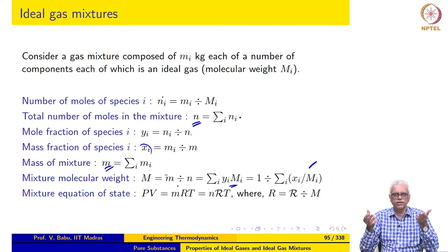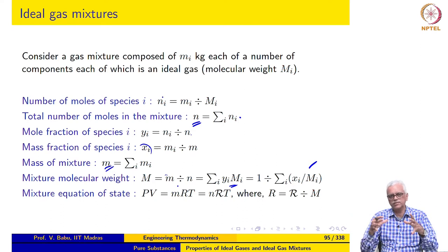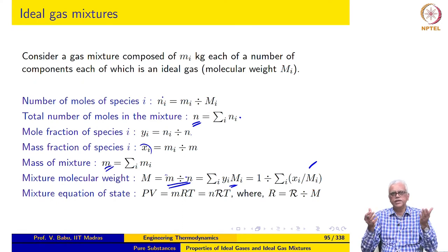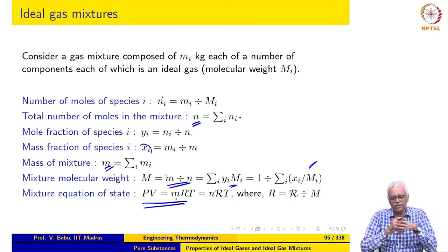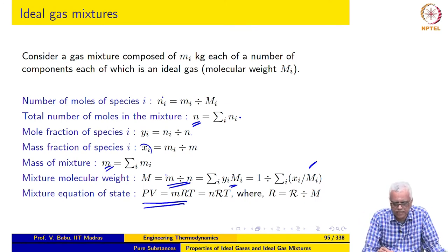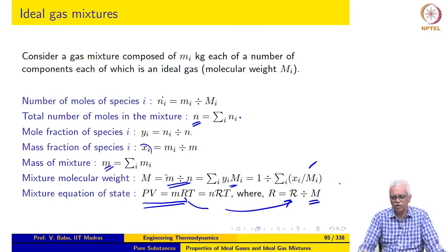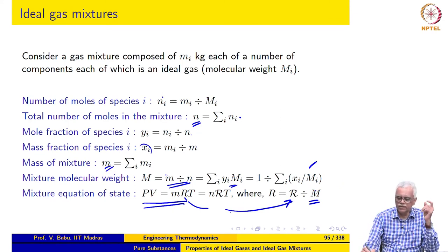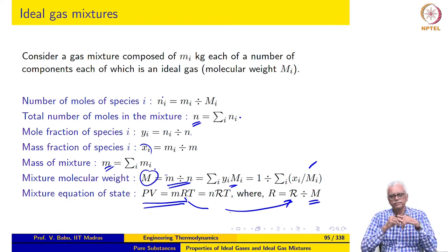We can now define a mixture molecular weight: the mass of the mixture divided by the number of moles. Using these expressions, this equals Σyᵢmᵢ, or equivalently 1 over Σ(xᵢ/mᵢ). This is left as an exercise to derive. Effectively, a mixture of gases will have a molecular weight equal to this, meaning the mixture behaves like an ideal gas with an equation of state of the same form as for a single component gas, simply using R based on the mixture molecular weight.